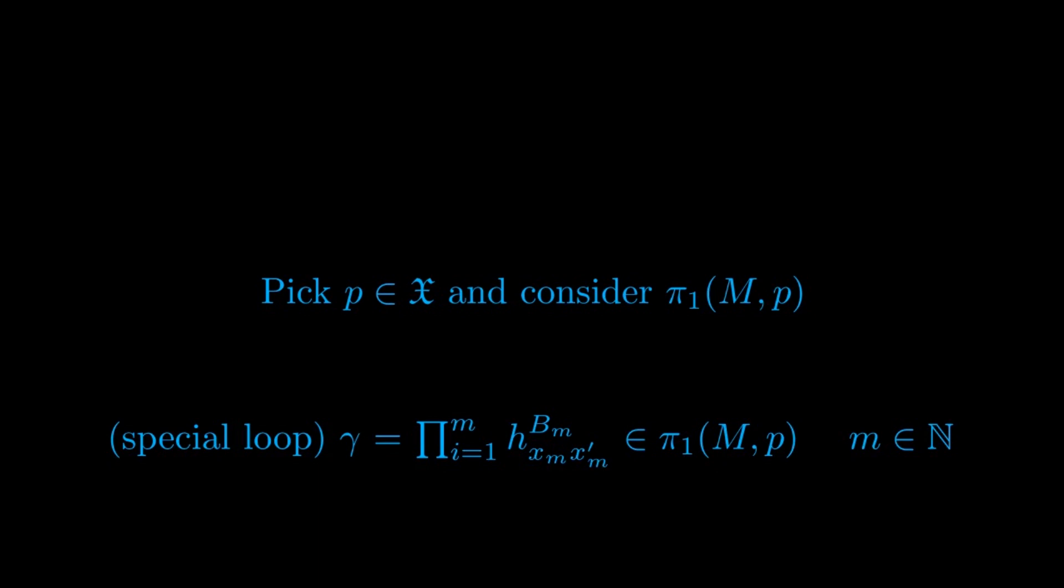We furthermore define a special loop to be a loop based at P that can be written as the finite product of paths of the type H_B(x,x') introduced before. Here, product is to be intended as concatenation of paths, that is the operation with respect to which homotopy classes of paths based at a point form a group, the fundamental group.